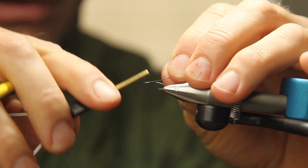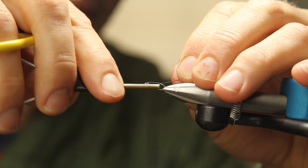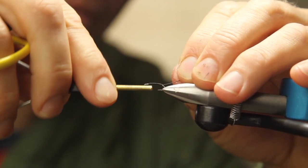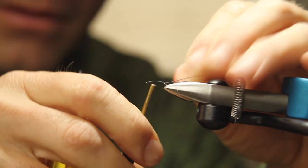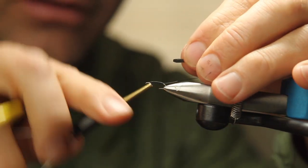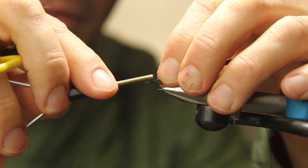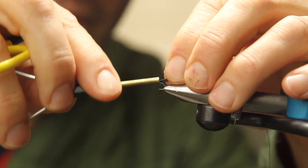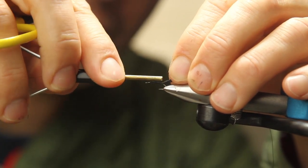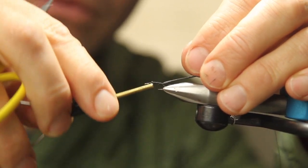Going to tie in some black ultrawire for a rib and reinforcement. We're going to wrap over that with our thread right back to the barb of the hook and then come back forward. And then we're going to put our foam on there. This is razor foam cut into a thin strip and we're just going to tie that in kind of forward, wrap over it with our thread right back here to where our wire is hanging out. Come back forward with your thread.